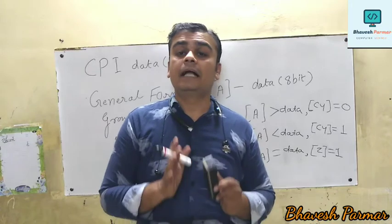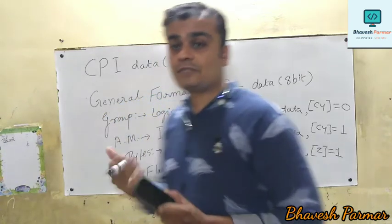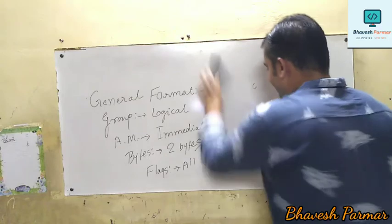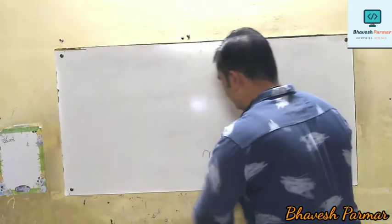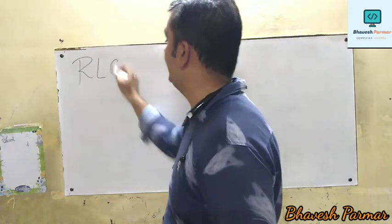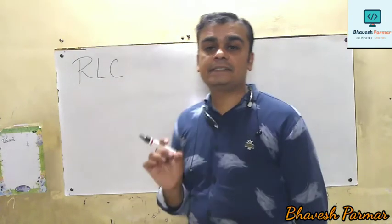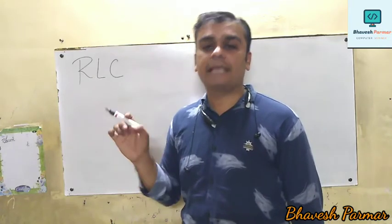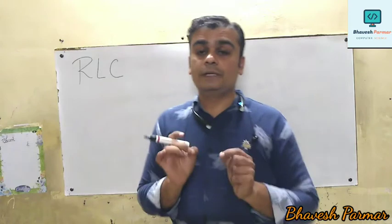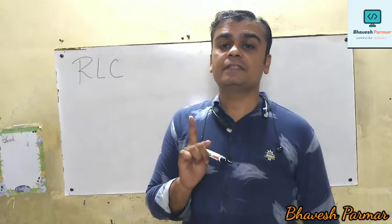Now we are going to focus on the next very interesting topic — rotate instruction. We have to discuss four different rotate instructions. The first rotate instruction is called RLC, which stands for Rotate Accumulator Left Without Carry. In this type of instruction the operand is missing — only the opcode is given — so the addressing mode is implied or implicit addressing mode, and it is always a one-byte instruction.